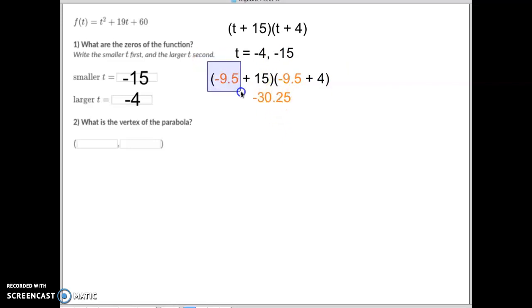And when I do that I get negative 30.25. So I know that my x coordinate of the vertex is negative 9.5. Again that's the midpoint of these two. And when I plug that in for t up here and I solve, then I get my vertex, the y coordinate of the vertex which is negative 30.25.